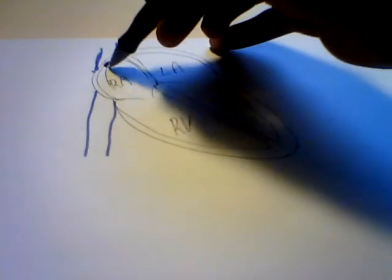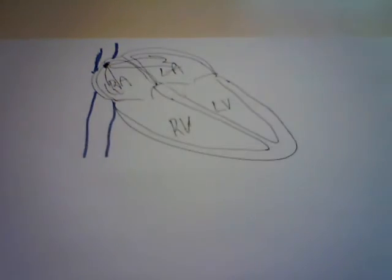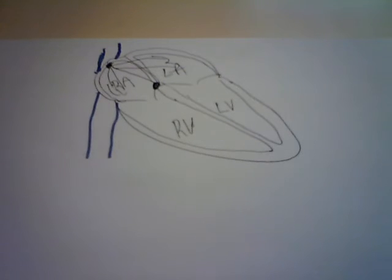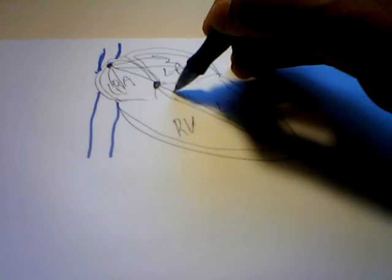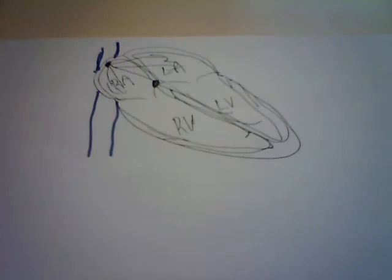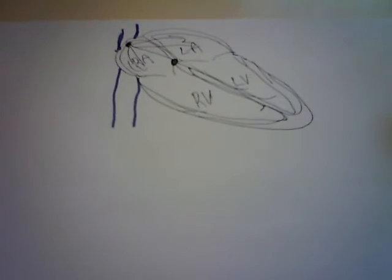At the junction where the superior vena cava meets the atrium, we have the SA node — the sinoatrial node — which fires impulses. The impulses travel and activate both atria, then travel down to the AV node, then down the His bundle, the left bundle branch, the right bundle branch, and then to the Purkinje fibers, which activate the ventricles.